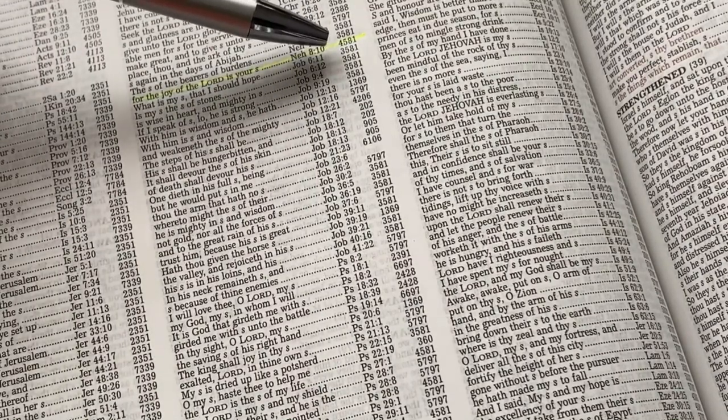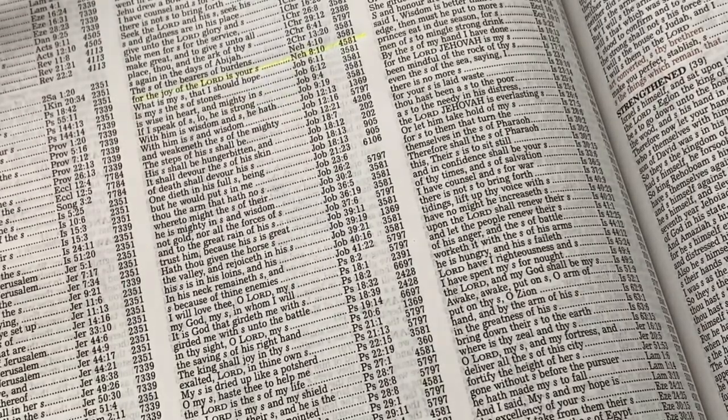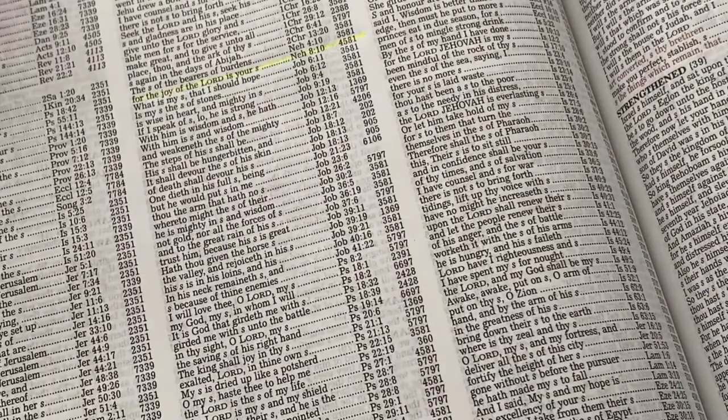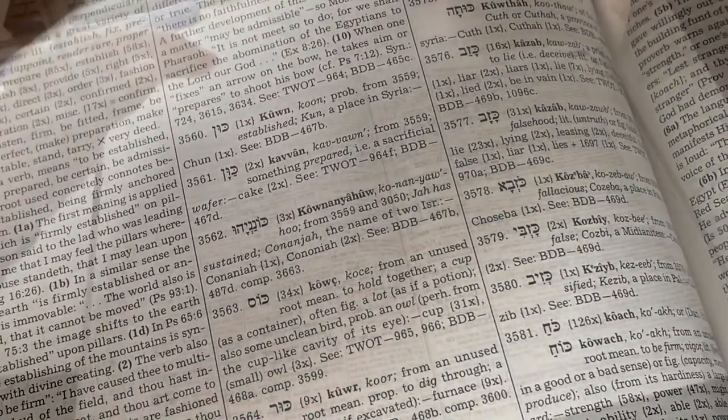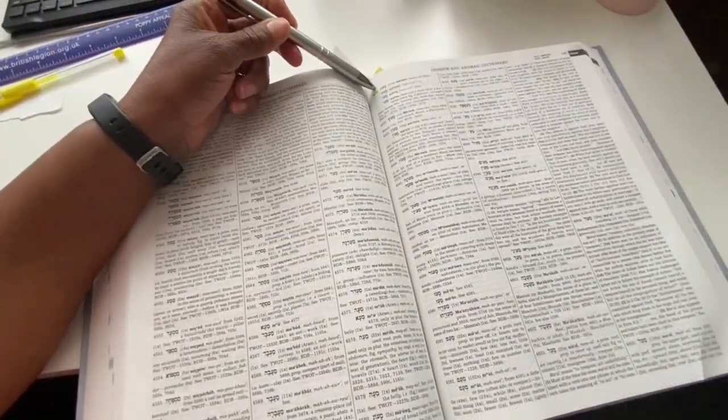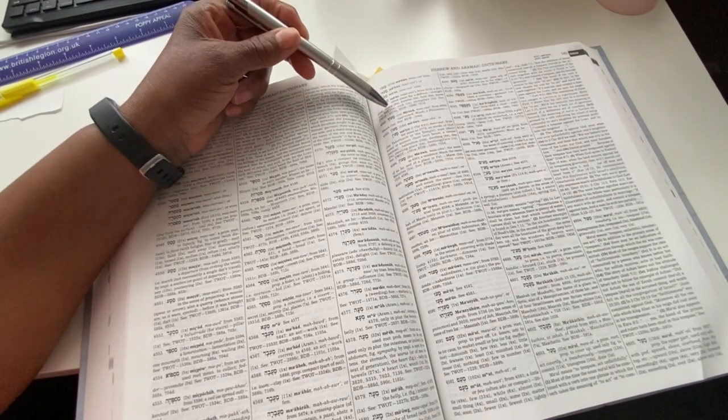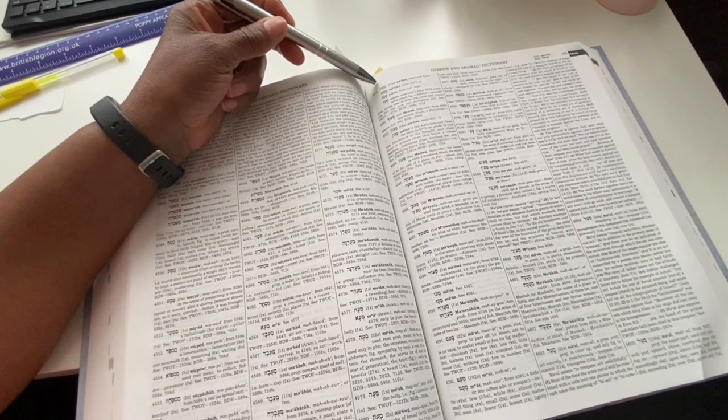So then you go to the back with your reference number 4581. Okay, so your reference is here. 4581. And then you will see the meaning of the word strength based on Nehemiah chapter 8, verse 10.